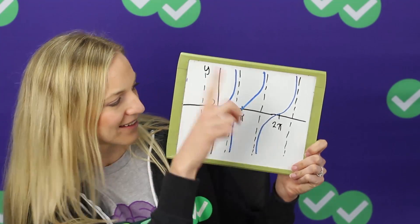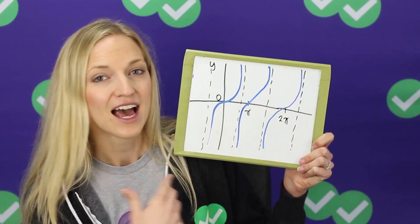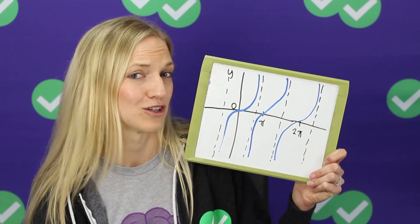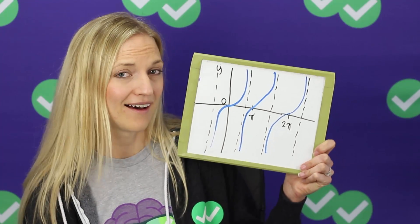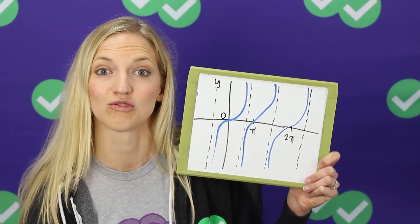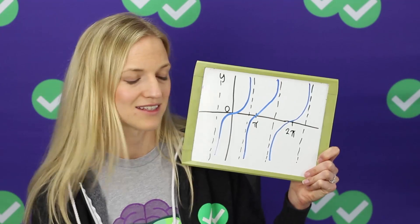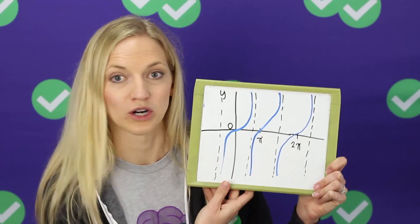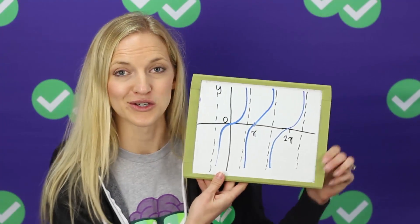This is what a tangent graph looks like. I'm not going to talk too much about this because for the purposes of the ACT, you pretty much just need to recognize the tangent function graph. We're going to go back to sine and cosine and talk about basic transformations.